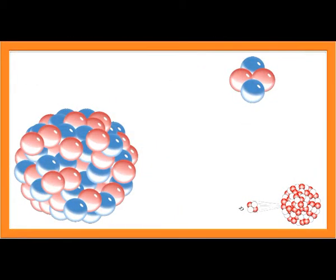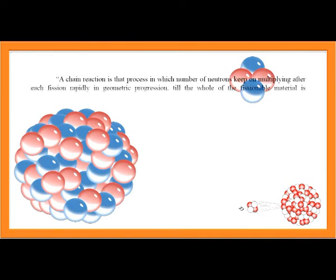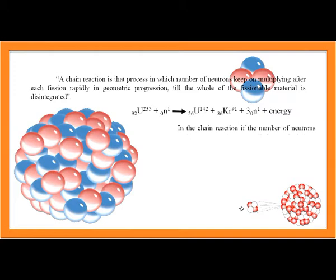A chain reaction is a process in which the number of neutrons keeps multiplying after each fission rapidly in geometric progression until the whole fissionable material is disintegrated. If the number of neutrons produced is kept constant, it is called a controlled chain reaction.